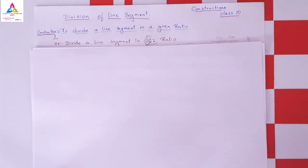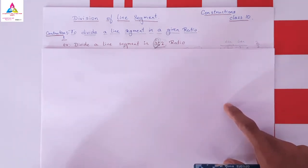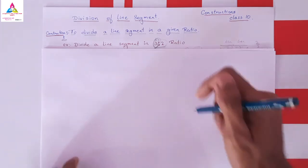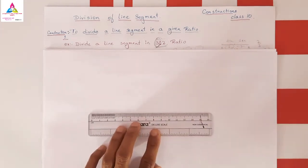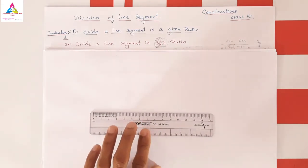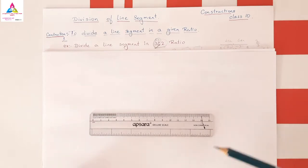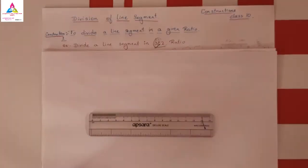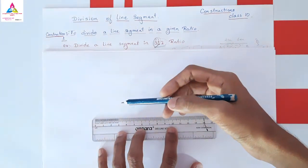Coming to the next part — we have already done dividing a line segment in a ratio 3:2, but we have one more method of solving this. The ratio remains 3:2 only. I will not insist you use this method because while constructing a triangle this method is not useful — it only works for a line segment construction. This alternate method will not be useful for constructing a similar triangle, so just go through it.